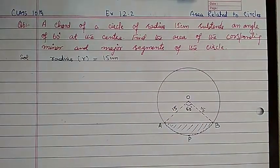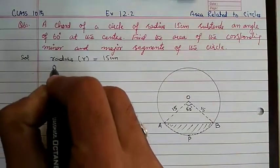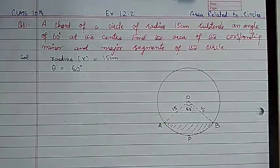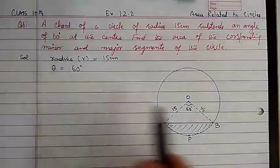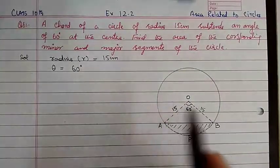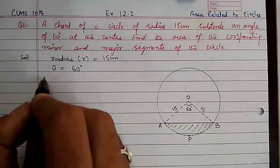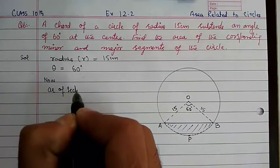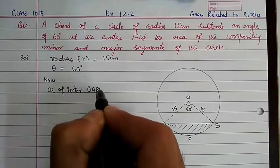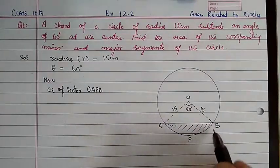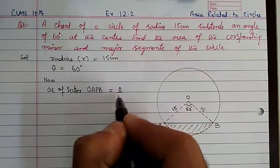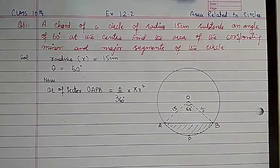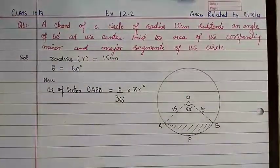Given values: radius = 15 cm, and theta (angle of sector) = 60 degrees. These two values are given to us. The formula for area of sector OAPB is: theta divided by 360, into pi r squared.